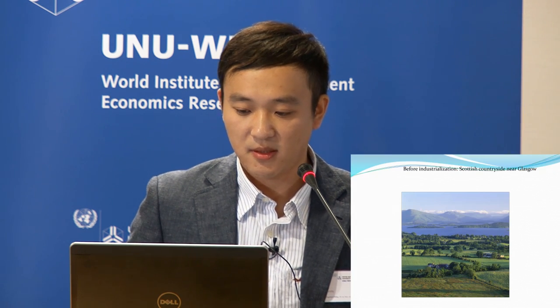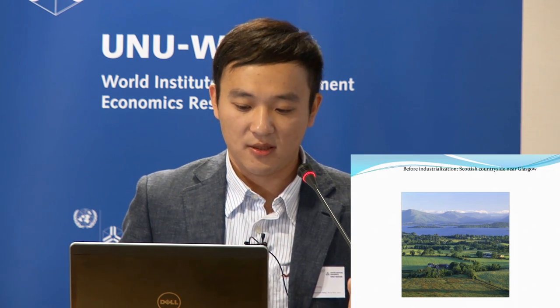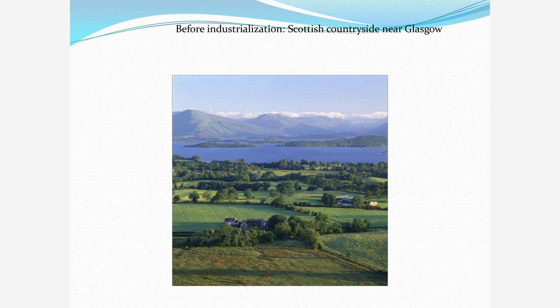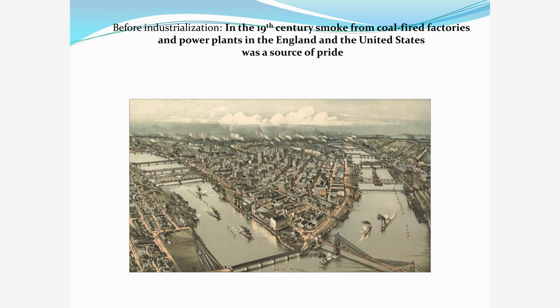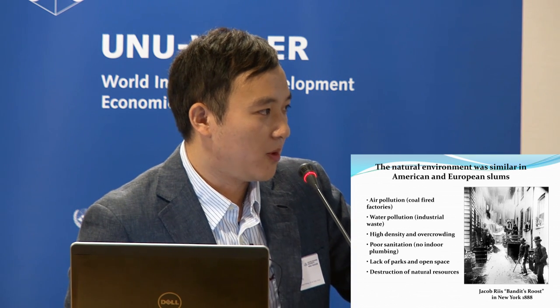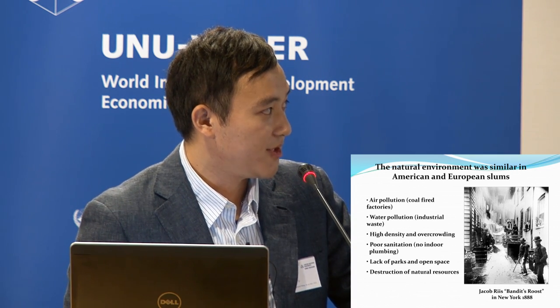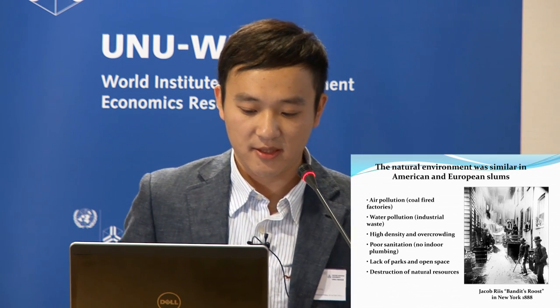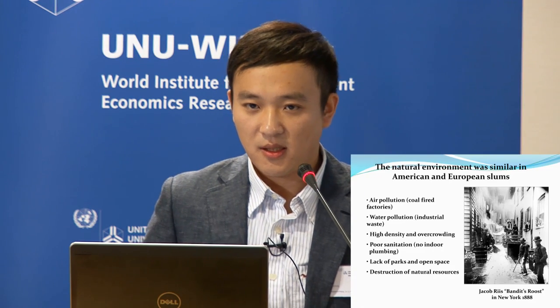Second, I will talk about sustainable urban form. It is quite important because it is related to reducing vehicle miles traveled in a city. We need to start from the industrial civilization. From that period, our energy consumption in cities was vastly enlarged, and it caused a lot of environmental problems such as pollution, water pollution, and high-density overcrowding.